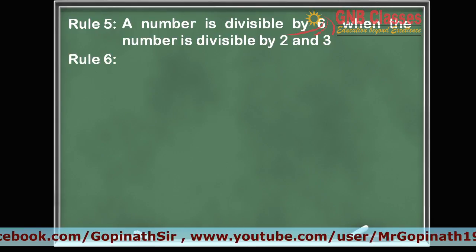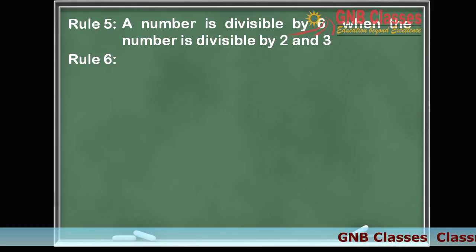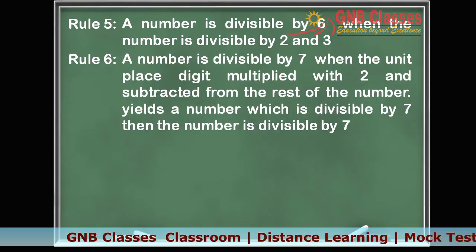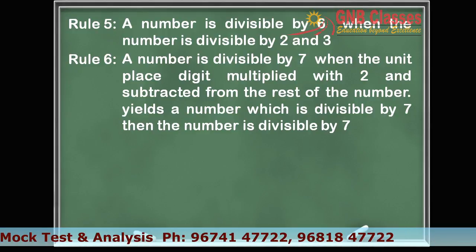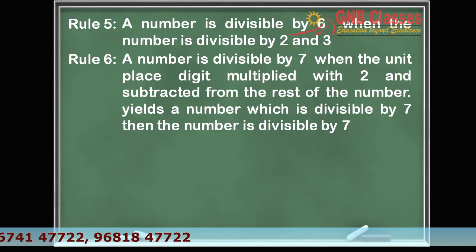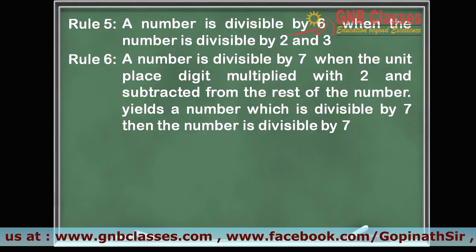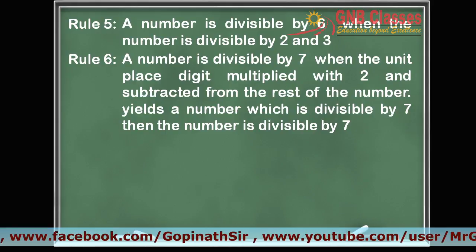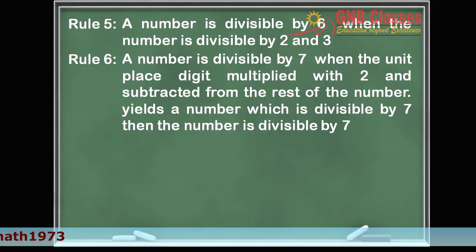Rule 6 speaks about whether a number is divisible by 7 or not. To check this, we multiply 2 with the last digit of the number and then subtract it from the rest of the number. Whatever number we get after subtracting, if it is divisible by 7, then we say the whole number is divisible by 7. So we multiply 2 with the last digit, subtract from the rest, and if the result is divisible by 7, the whole number is divisible by 7.